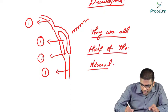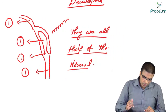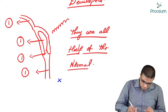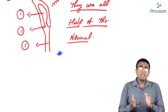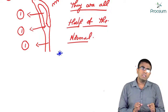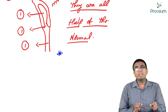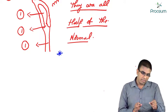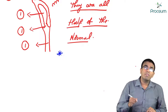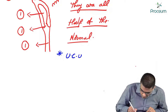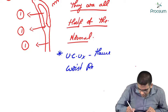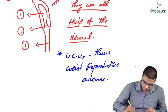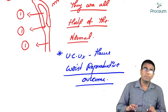Because unicornuate uterus is half of the normal structure, it is very difficult for a female to get pregnant with this kind of uterus. Therefore, unicornuate uterus has the worst reproductive outcome. That is the first important MCQ: which uterine anomaly has the worst reproductive outcome? Answer: unicornuate uterus.